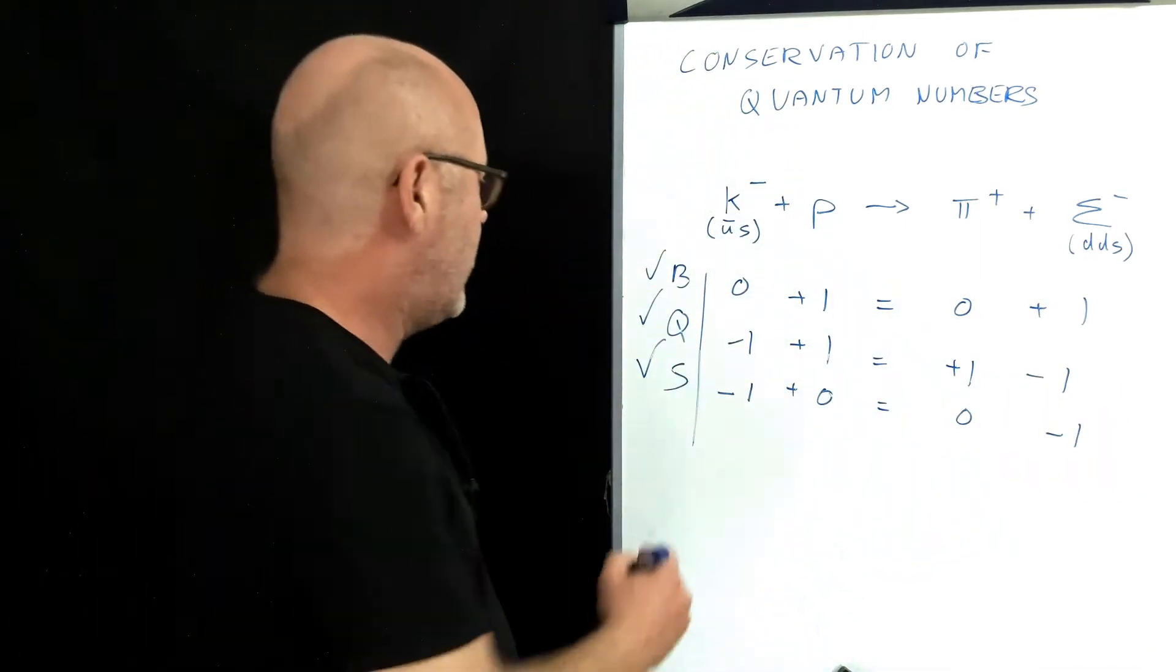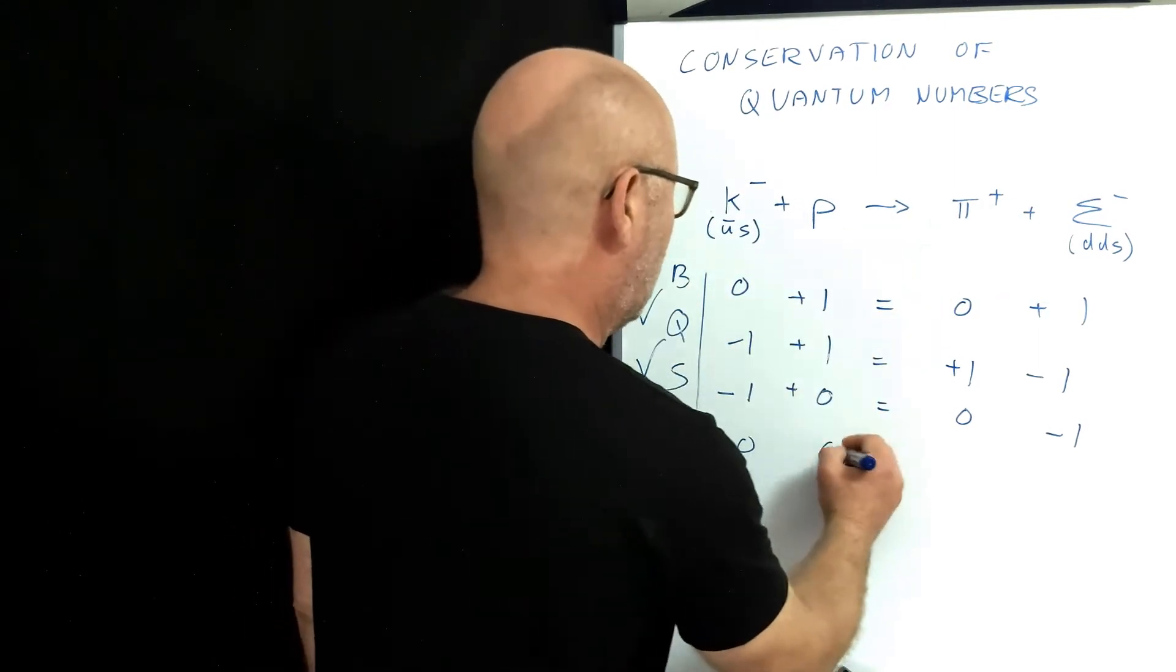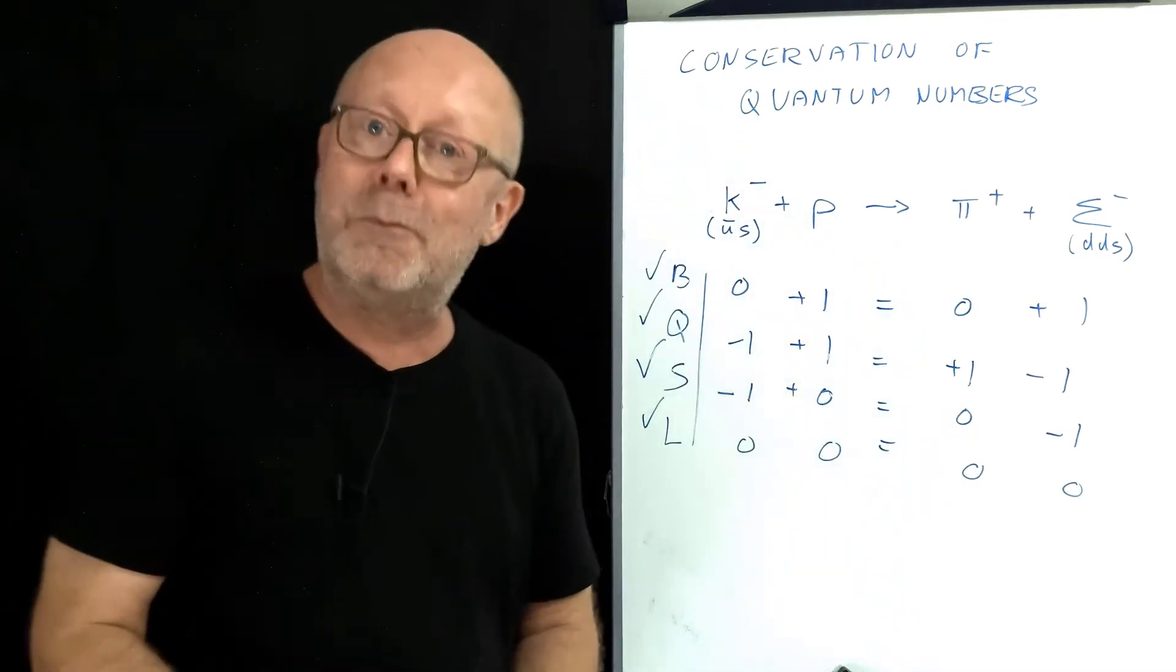And finally, let's look at the lepton number, where we don't have to think too much, because there's no leptons involved, so zero equals zero. Check! This reaction is possible.